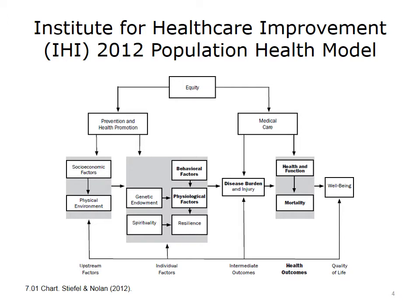Prevention and health promotion are influenced by upstream factors, which include socioeconomic factors and the physical environment. There are also individual factors, such as a person's genetic endowment, their spirituality, behavioral factors, and physiologic factors that determine resilience at an individual level. In terms of medical care, there are intermediate outcomes that are related to disease and injury. The upstream factors and the individual factors will affect intermediate outcomes and also affect states of health—that is, people's ability for health and function, as well as their mortality. These then lead to quality of life or well-being.